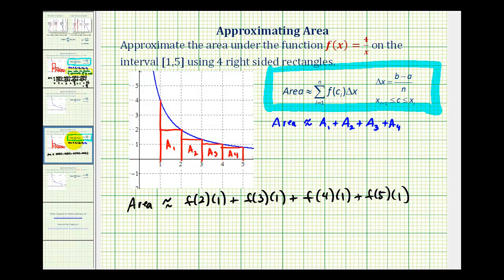Going back to our example now, we'll substitute 2, 3, 4, and 5 into the original function. If f(x) = 4/x to determine the height of each of these rectangles, f(2) would be 4/2 times 1, f(3) would be 4/3 times 1, f(4) would be 4/4 times 1, and f(5) would be 4/5 times 1.